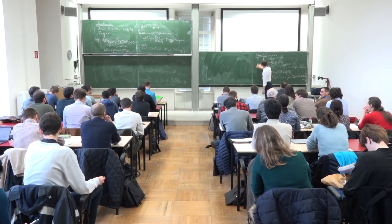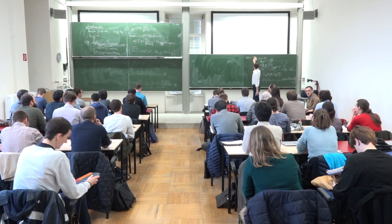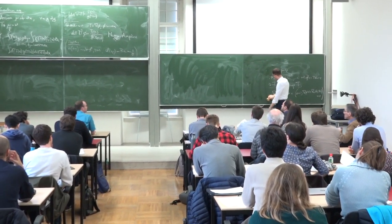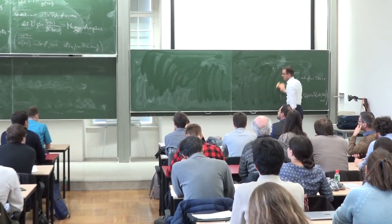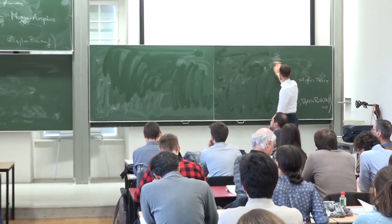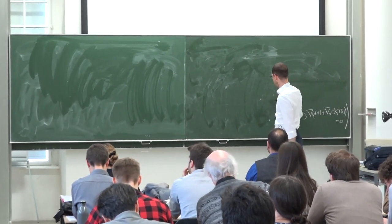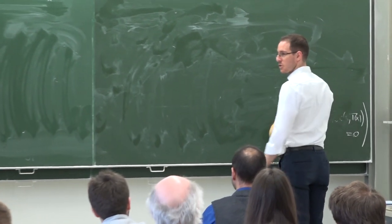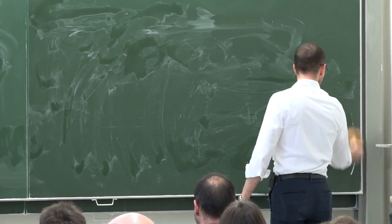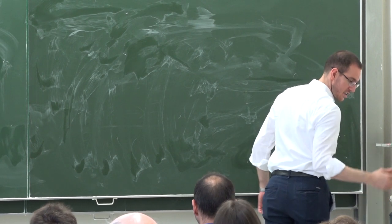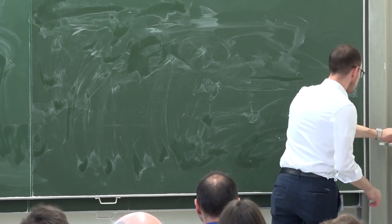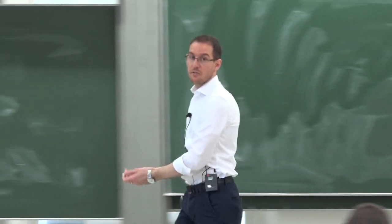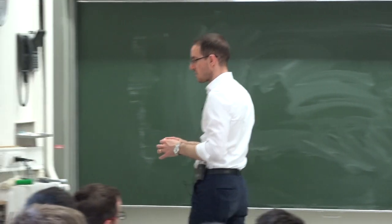So we arrived at the Monge-Ampère equation which is there on the top. I've written that equation formally because I assumed I had enough regularity to do the computations. This looks a bit like the chicken and egg problem because I want to prove regularity using the Monge-Ampère equation, and then I needed regularity to write it. So this was more motivational to write it down, but in fact you cannot really use it because you don't have enough regularity.